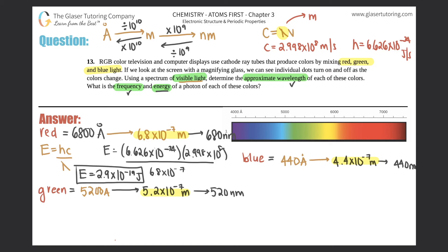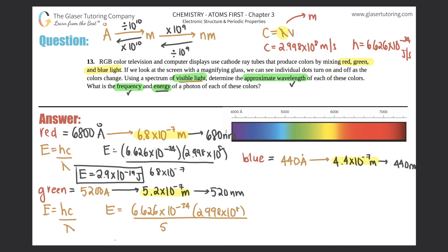For green: E = hc/λ = (6.626×10⁻³⁴ × 2.998×10⁸) ÷ 5.2×10⁻⁷. Calculating that gives us 3.8 times 10 to the negative 19th joules. Box that answer.